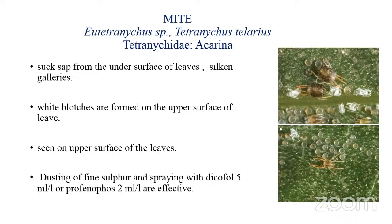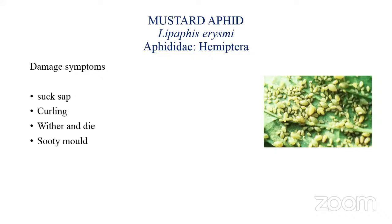If mite infestation is more, go for dusting with fine sulfur, and spray with dicofol and profenofos. Next, we will see the pests of mustard. The scientific name of mustard is Brassica napus.